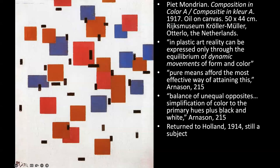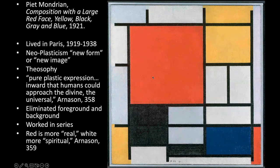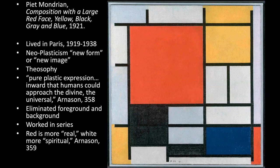A balance of unequal opposites — simplification of color to the primary hues plus black and white. He returned to Holland from Paris in 1914, still working with a subject even while pursuing that musical composition quality. And then we get to something you've likely seen before — even before this class, you've surely encountered something like this. And once you've seen it, you've recognized it. You probably think, 'I could do that with some tape and some paint.' But it is something that speaks to people — once somebody has seen one of these pieces, they know it forever.